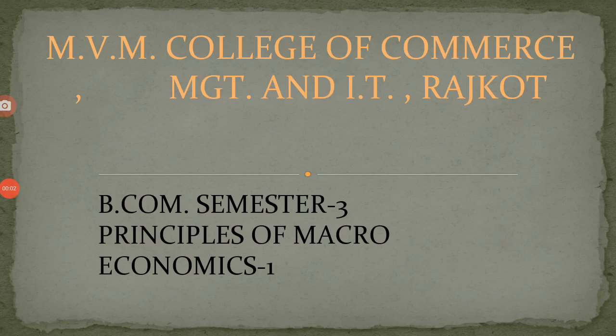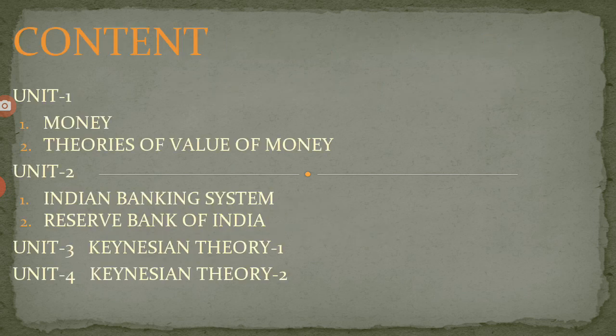Hello everyone. I am going to cover one of the subjects of BCom Semester 3, which is Principles of Macroeconomics 1. Here is the syllabus. There are a total of 4 units. Under Unit 1, there are 2 sub-chapters. The first is Money, which includes various functions of money and different components with their meaning and significance. The second chapter is Theory of Value of Money, which includes the Quantity Theory of Money with two equations: Fisher's equation and the Cambridge equation, with their assumptions and criticism.